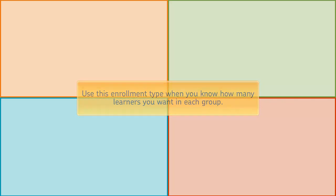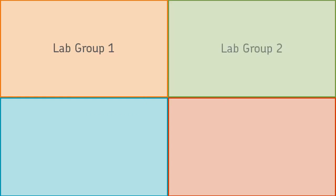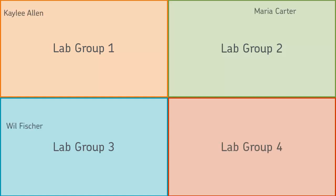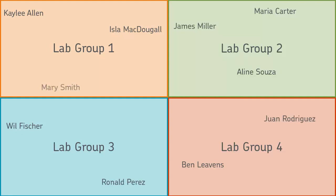Use this enrollment type when you know how many learners you want in each group. For example, your course has an associated lab. The lab is small and can only accommodate three students and one teaching assistant at a time. You use the 'Groups of Number' enrollment type to divide the ten learners into the minimum number of groups necessary to host the lab.